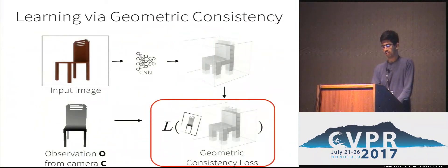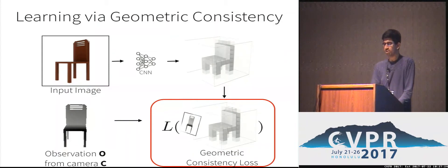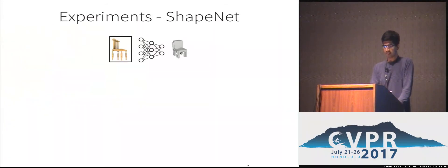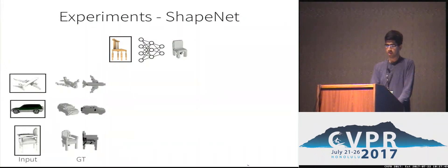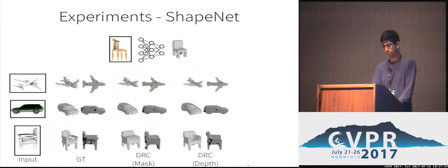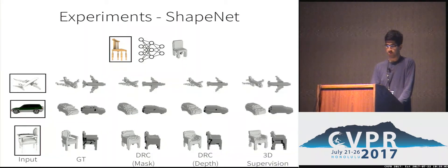Looking back at the big picture, we defined a ray consistency based term to instantiate this geometric consistency loss, and now we can use this in many interesting scenarios. We learn single view 3D prediction using multi-view supervision across a few datasets. First, we look at the ShapeNet dataset as a clean synthetic setting to analyze our approach. We train a CNN to predict 3D shape using multi-view mask or depth supervision. At test time, our CNN infers 3D from a single RGB image. Our predictions using mask supervision look pretty reasonable except we can't learn concavities, for example in the chair shown. Using depth supervision addresses this issue and results improve. Our predictions using this much weaker form of supervision are of similar quality to those using the stronger full 3D supervision.